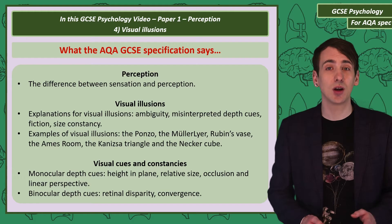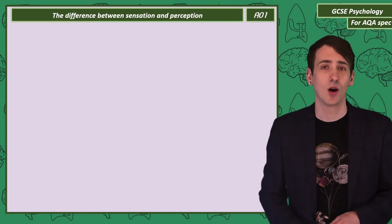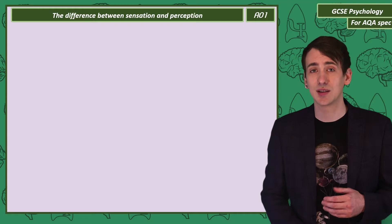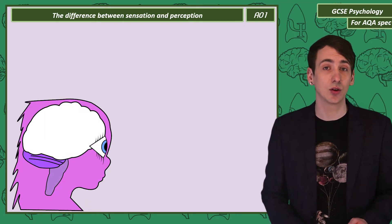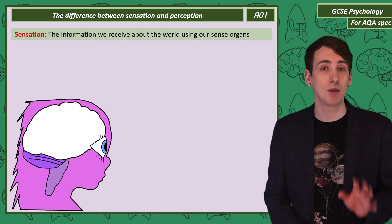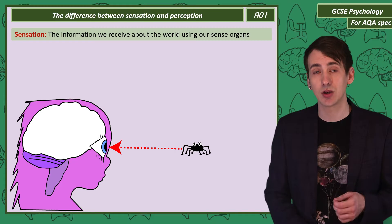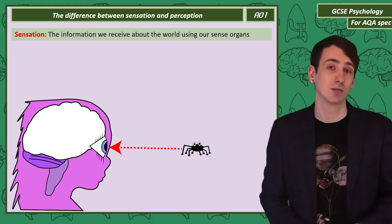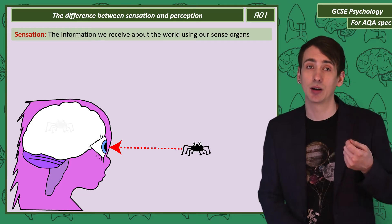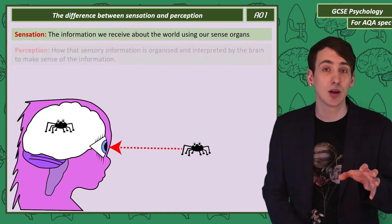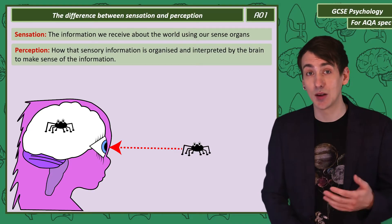Before we start looking at some visual illusions, let's clarify two definitions. We need to understand the difference between sensation and perception. We have sense organs and they detect information about the world outside of our brain. The detection of that information is sensation. But that information, after detection, is then processed by the brain — it's organised and interpreted to make sense of what we've just detected. That is perception.